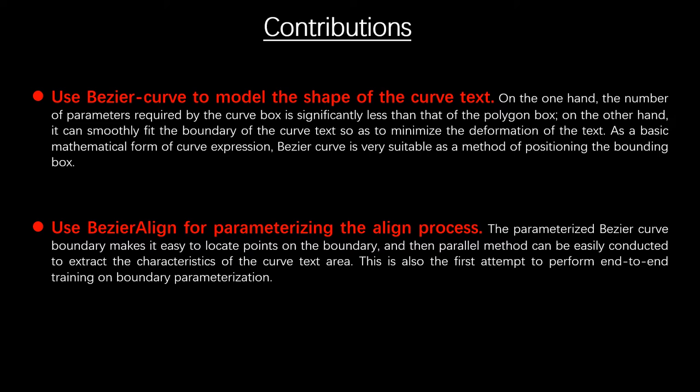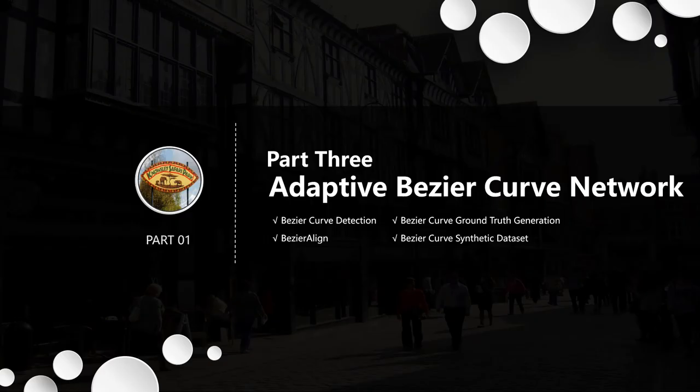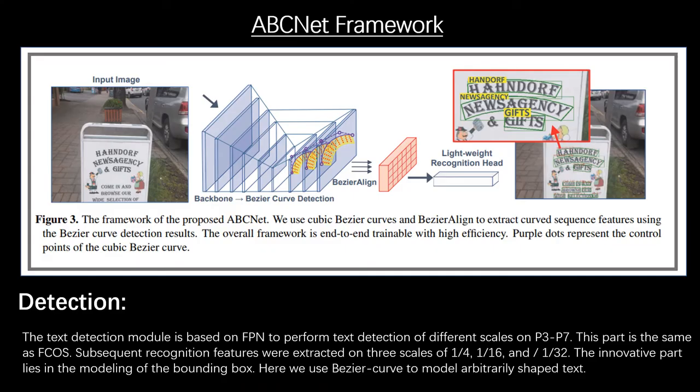Second, use Bezier align. The parameterized Bezier curve boundary makes it easy to sample points on the boundary, and then we can simply use the parallel method to extract the feature of the curved text region. In this part, we will introduce the overall structure of ABCNet. The design of the network in this paper can be divided into anchor-free text detection module, sampling module, and the lightweight recognition module.